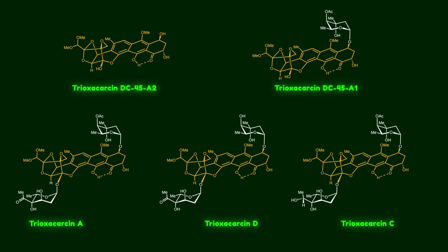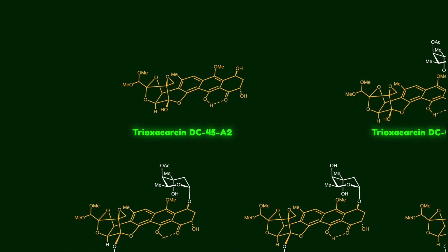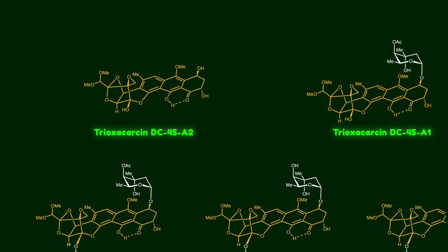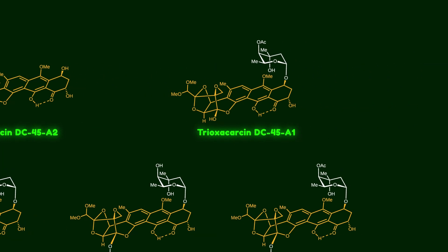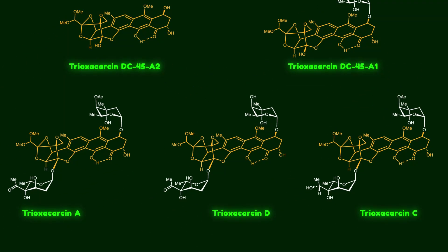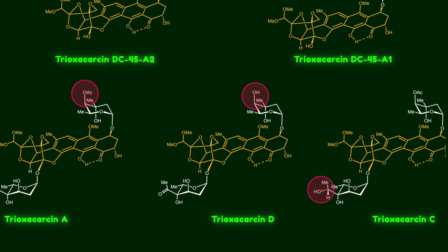Since 2015, Nicolaou and co-workers have studied the synthetic approaches and biological properties of tyroxycarcin natural products, and they have accomplished the total synthesis of five members of this family. All of them share the same main skeleton, but differ in the structure of their sugars. DC45A2 is the simplest member without any sugar moiety; DC45A1 has only one sugar. Tyroxycarcin A, D, and C contain two sugar moieties but differ in substituents on the sugars. Here I'm going to walk you through the total synthesis of tyroxycarcin D.